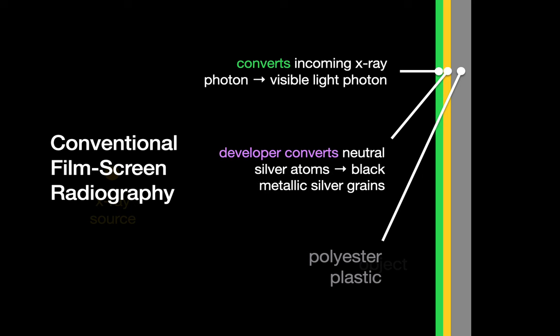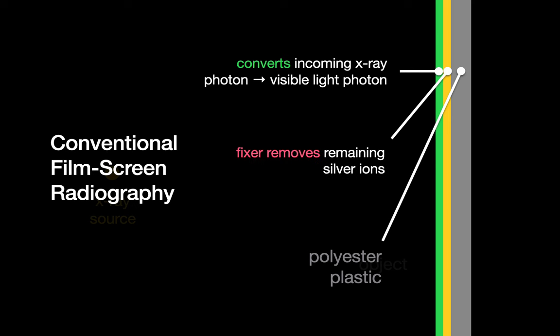The film is then developed. During developing, the film is bathed in a developer solution that changes neutral silver atoms on the film into black metallic silver grains, converting what was a latent image into a visible image to our human eye. The developer solution is then rinsed away with water and the film bathed in a fixing solution that removes any remaining unexposed silver ions. The fixing solution is then rinsed away with water and the film dried, resulting in a permanently captured chest x-ray image.